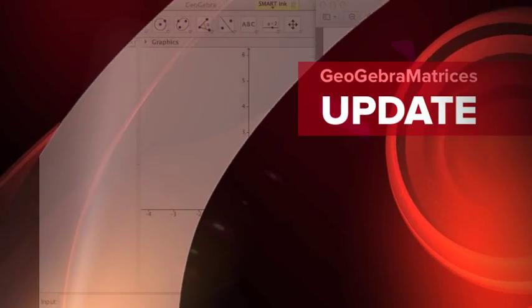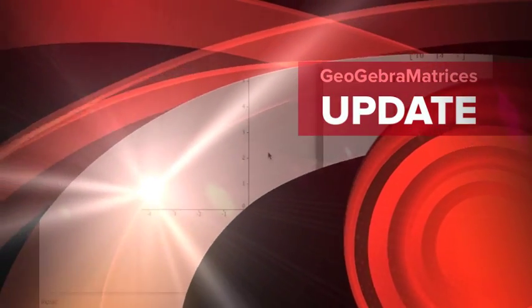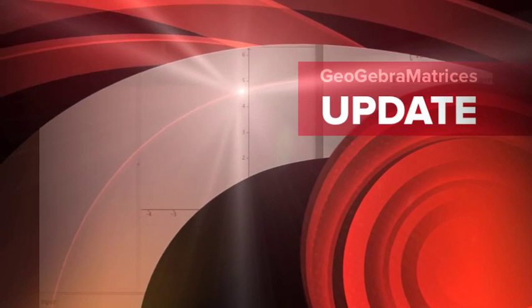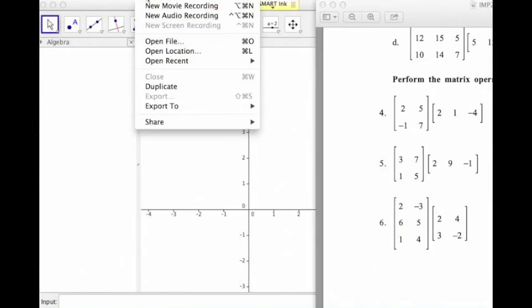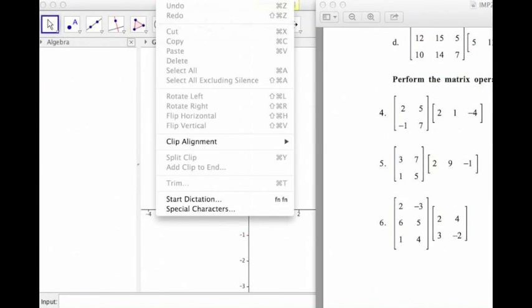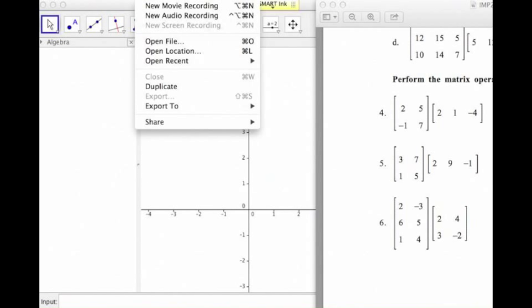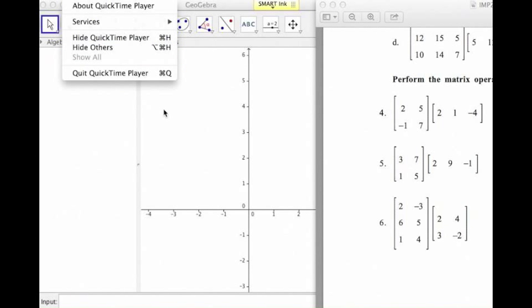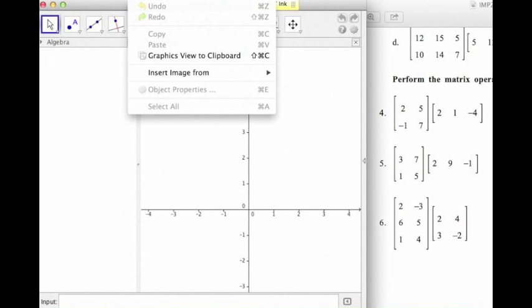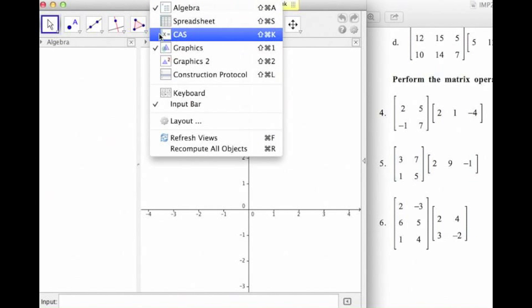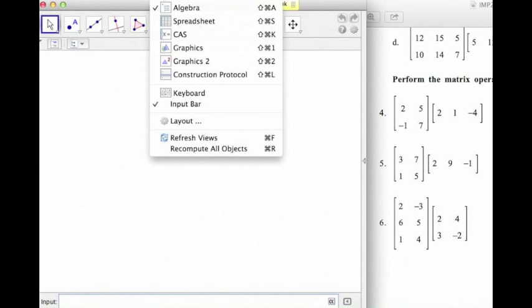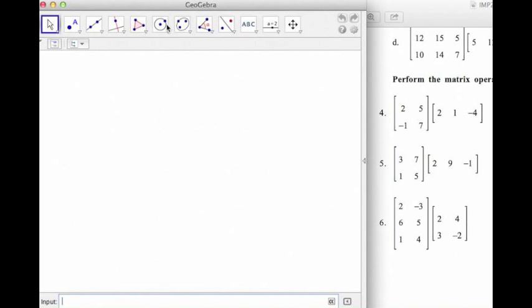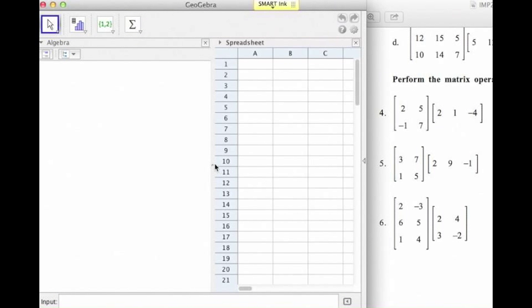We're going to use GeoGebra to look at matrix multiplication. The first thing I'm going to do in GeoGebra is change my view so that I am eliminating the graphics view and activating the spreadsheet view, and that way we can enter our matrices in the spreadsheet.